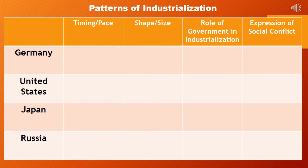Patterns of industrialization varied among nations as the Second Industrial Revolution progressed. The next several slides will compare and contrast the patterns of industrialization of four select nations during the Second Industrial Revolution: Germany, the United States, Japan, and Russia. We will compare and contrast the pacing and timing of industrialization, the shape and size of industrialization, the role of the nation's governments in industrialization, the expression of the nation's social conflict as the nation industrialized, and each nation's major industrial developments during the Second Industrial Revolution.